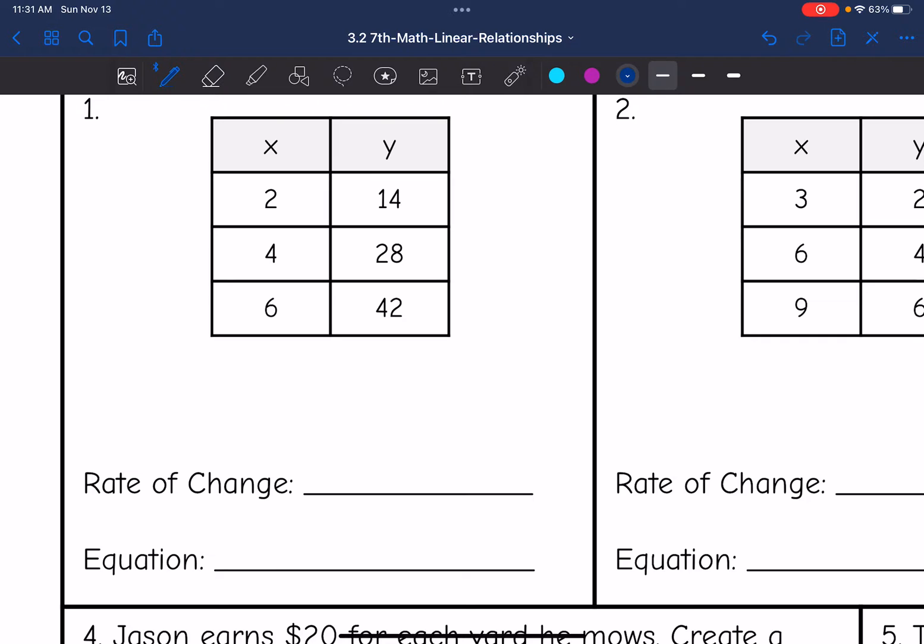Let's start with number one. To find the rate of change or constant of proportionality, I'm just going to do y divided by x, and I'll use this first ordered pair. So I will do 14 divided by 2. 14 divided by 2 is 7, so the constant of variation is 7, or the rate of change is 7. So then the equation would be y equals 7x.